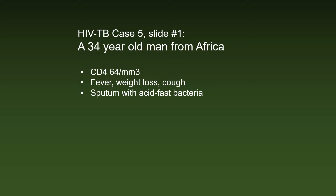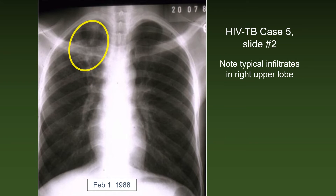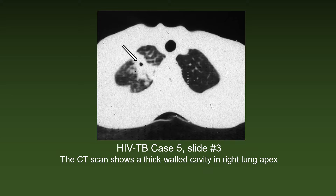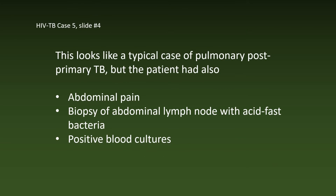The next case is a seeming exception to these rules. He was immunosuppressed, had typical symptoms and sputum with acid-fast bacteria. His chest X-ray showed typical infiltrates in the right upper lobe, and CT imaging showed a thick-walled cavity in the right lung apex. This looked like a typical case of pulmonary post-primary TB in an HIV-negative. But the patient also had abdominal pain, and biopsy of an abdominal lymph node showed acid-fast bacteria, and he had positive blood cultures.